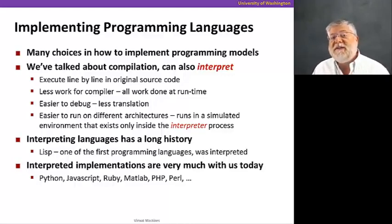This makes code easier to debug because we're always working off the source code. We're not looking at machine code instructions or assembly language instructions that lose context. It's also easier to make languages run on different architectures because we're running the program in a simulated environment that is part of the interpretation process. Rather than having to know what the detailed instructions are that the CPU can execute, we can just interpret the language directly.